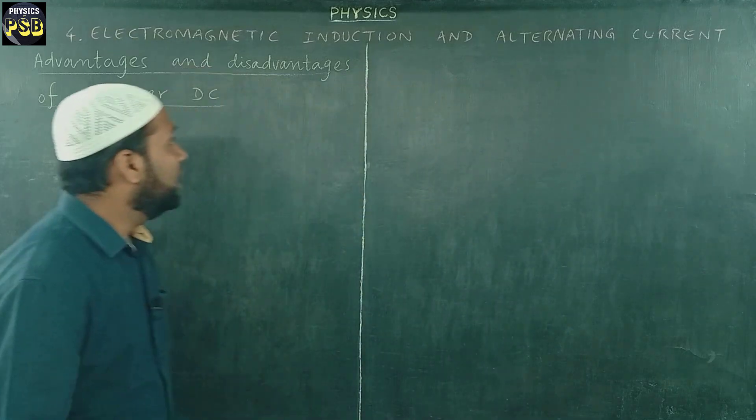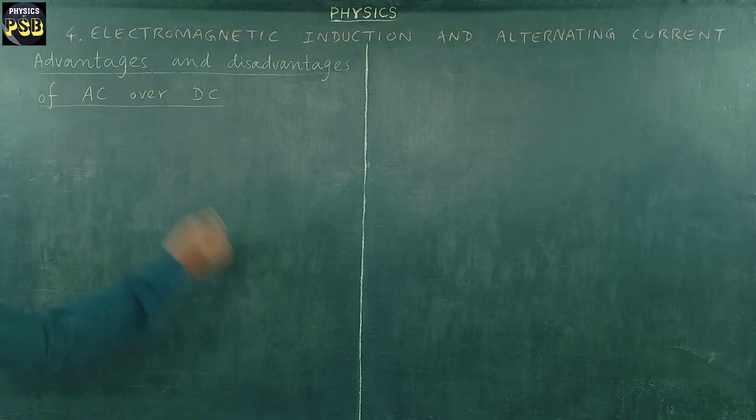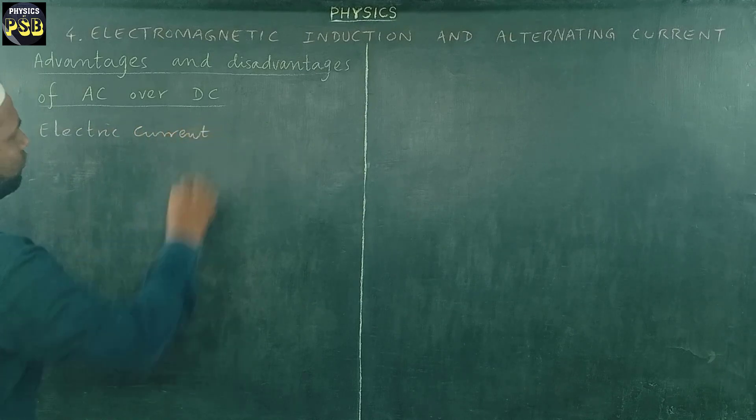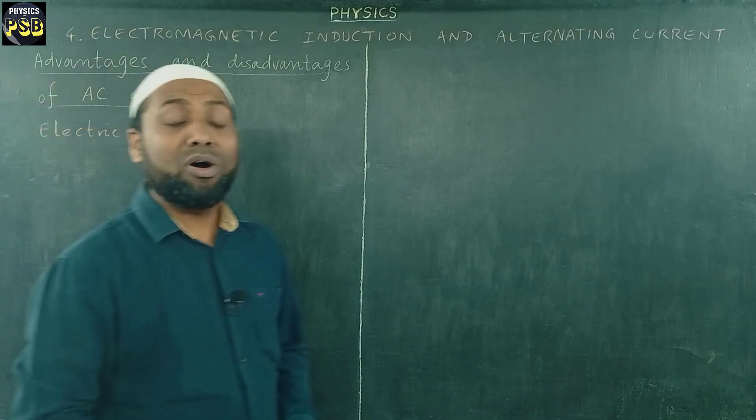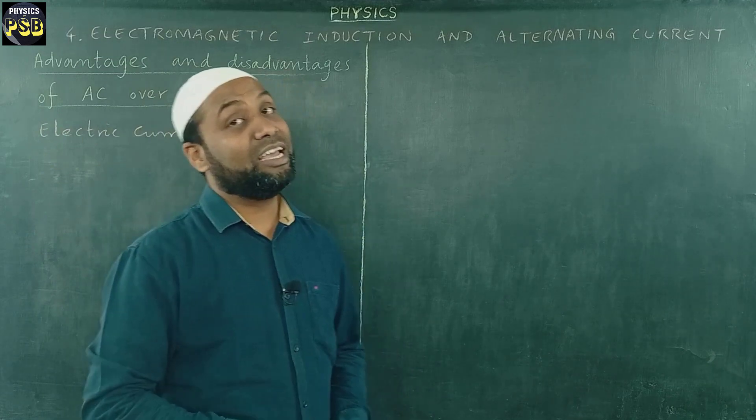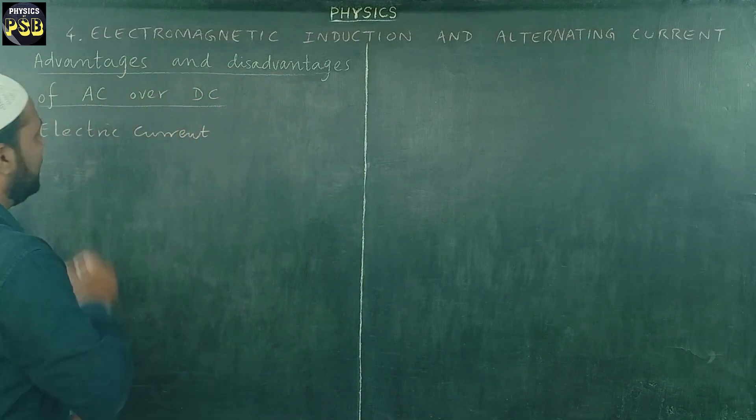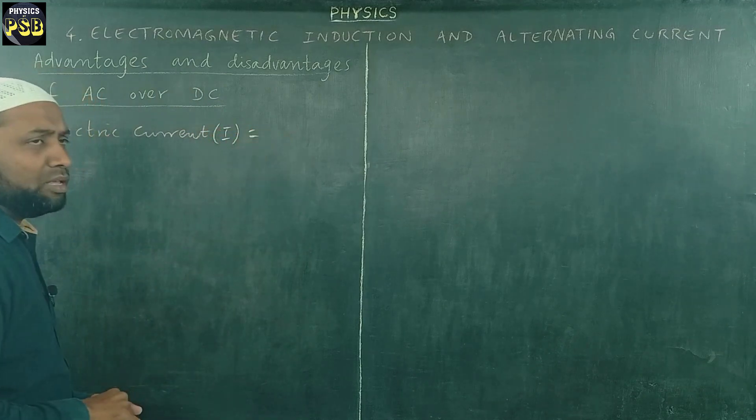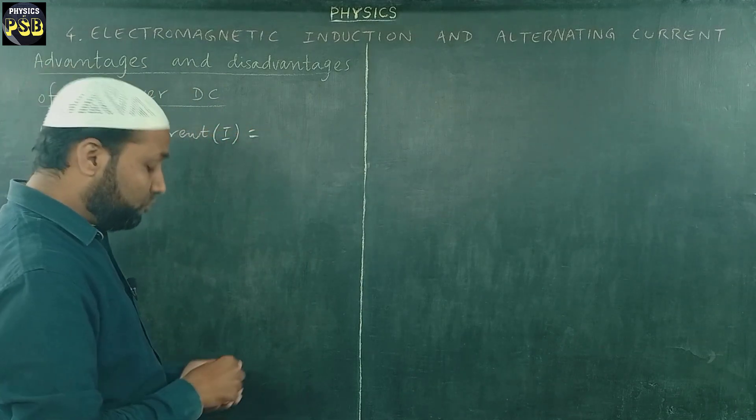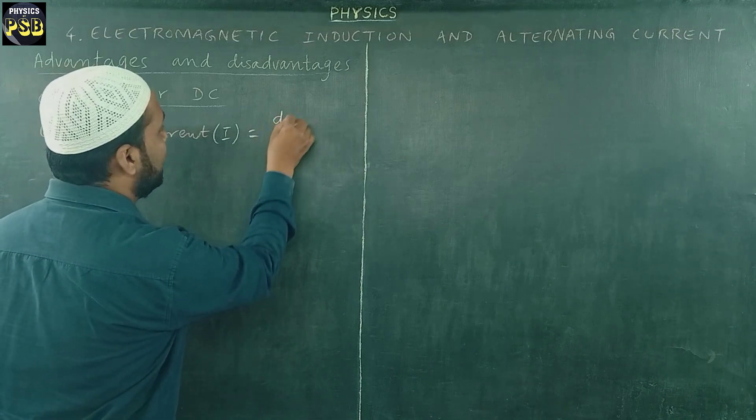Before going ahead, let me tell you what is electric current. Whenever electric charges flow through a conductor, it constitutes electric current. Electric current is represented by the letter I and is found to be equal to rate of flow of charges through the conductor.